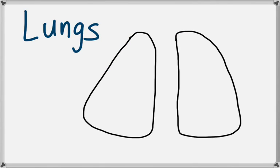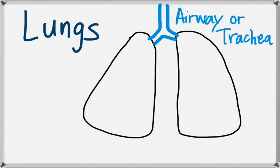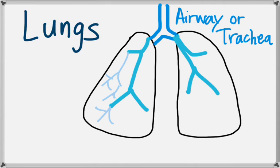Here's a simple picture of the lungs. We have two lungs, one on the right and one on the left. When we breathe, air goes down the airway or trachea. The airway branches inside the lungs. At the end of the branches are tiny sacs called alveoli.